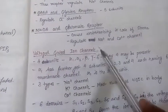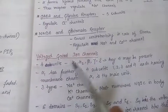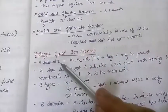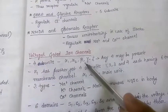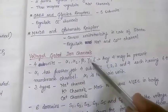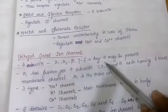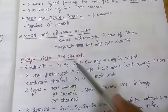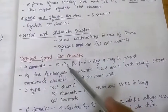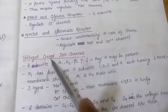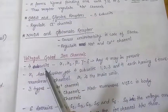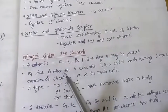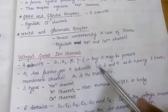Now we are moving to voltage-gated ion channels. For voltage-gated ion channels, the stimulus is voltage. They have four subunits: alpha-1, alpha-2, beta, gamma or delta — any combination of these can be present. So basically voltage-gated ion channels have four subunits.